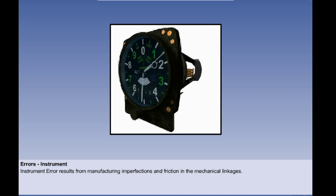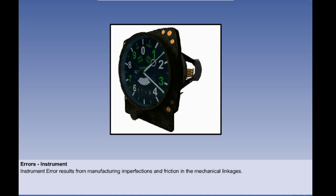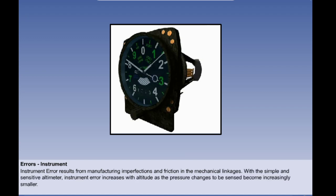The first error to consider is instrument error. Manufacturing imperfections and friction in the mechanical linkages cause errors throughout the operating range of the altimeter. Errors are kept as small as possible by adjustments within the instrument and the calibration process ensures that errors are within permitted tolerances. With the simple and sensitive altimeter however, the error increases with altitude as the sensitivity of the instrument becomes more significant at high altitude.